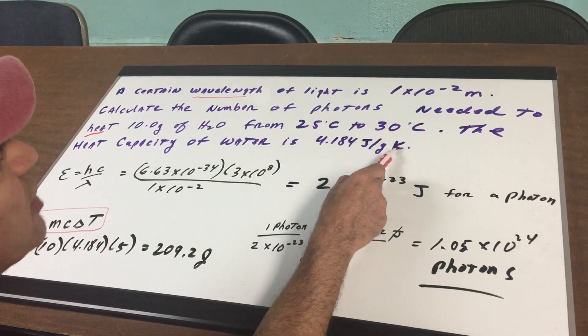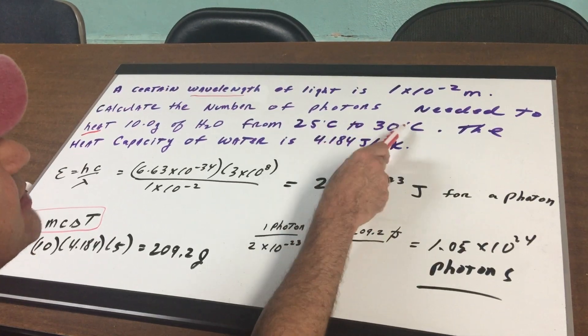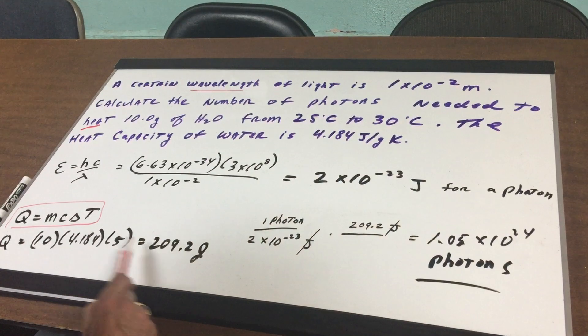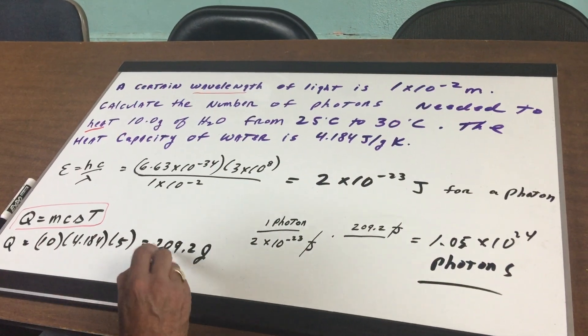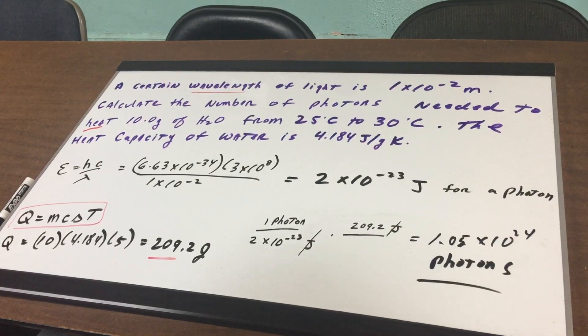A change in Celsius is also a change in Kelvin. So even though this is Kelvin and this is Celsius, the change of 5 Celsius is 5 Kelvin. So the delta T is 5. That gave me the total amount of joules, 209.2.